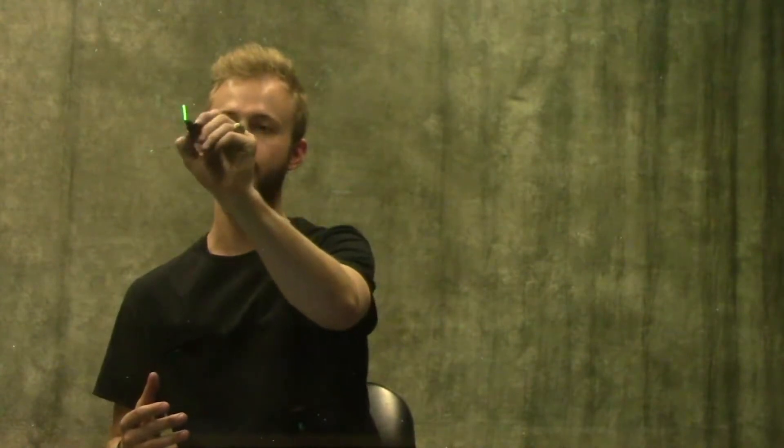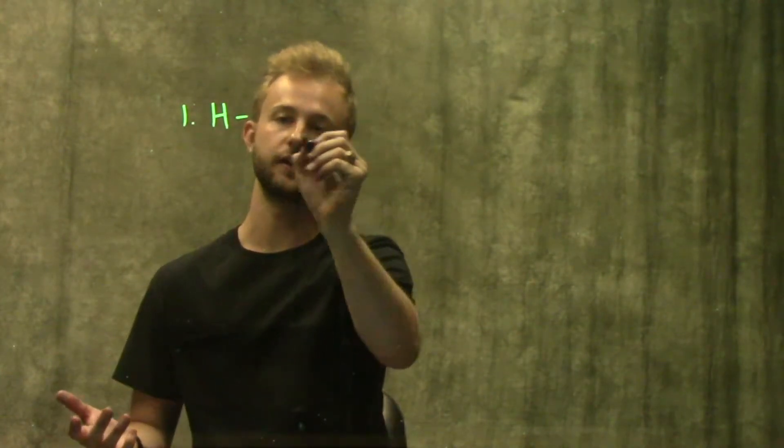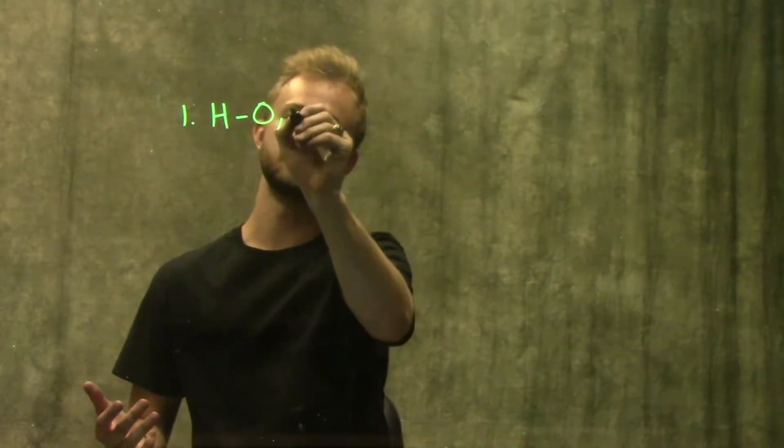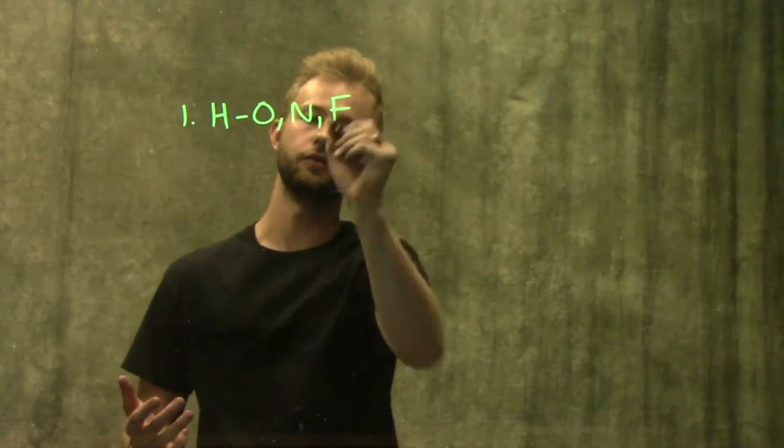For a hydrogen bond to actually take place we need two things. Firstly, we need one atom that has a hydrogen attached to an electronegative atom like oxygen, nitrogen, or fluorine.